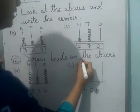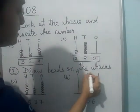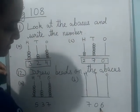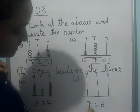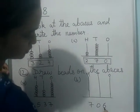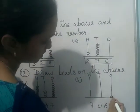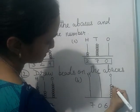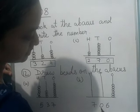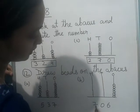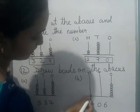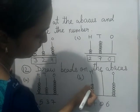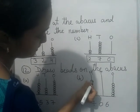Now number beads: 100's, 10's and 1's. 7 in 100's, 6. So this is in 100's place, this is 10's and this is 1's place. In 1's place, how many beads? 1, 2, 3, 4, 5, 6. In 10's place, 0 is there, so no beads will be drawn here. And in 100's place, 7 beads: 1, 2, 3, 4, 5, 6, 7.